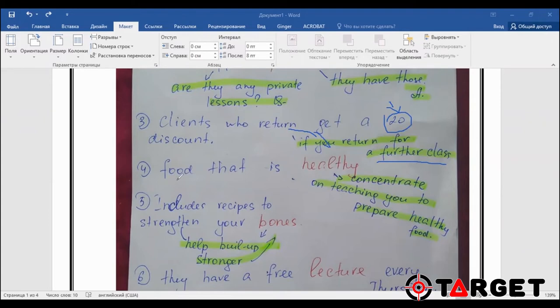Question number four, food that is the answer healthy. How did I get this answer? With the help of this sentence: concentrate on teaching you to prepare healthy food. Do you remember in the table, the second table was focus, and synonym for the word focus is to concentrate. So they concentrate or focus on teaching you healthy food. That's why I've written here healthy.